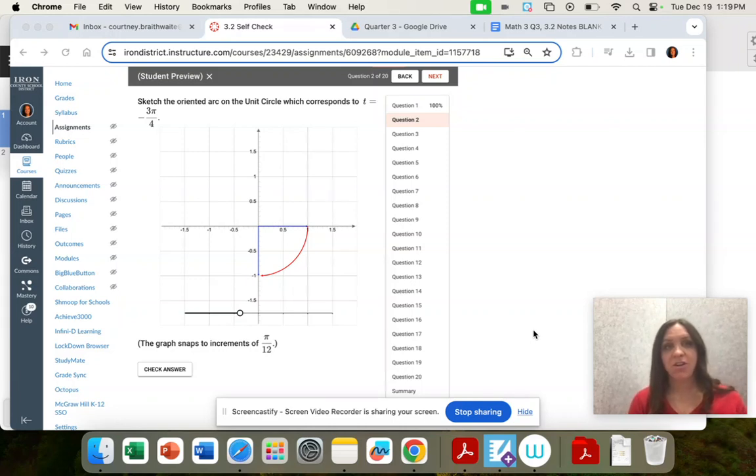Question two, we want to sketch the arc on the unit circle that corresponds to t equals negative three pi over four.